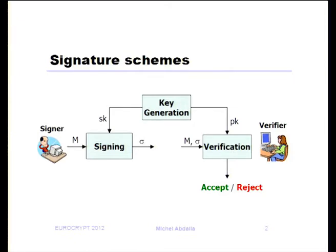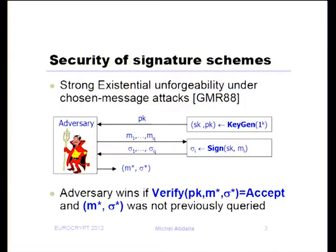This talk is about signature schemes, in which we imagine there is a key generation algorithm that generates the secret and public key — the secret key for signing and the public key for verification. The goal is: what is the standard notion of security? Here we'll be talking about strong existential unforgeability under chosen message attacks, where given a public key, the adversary can query an oracle to obtain valid signatures for messages of its choice, and eventually has to come up with a new message-signature pair not obtained through the oracle. The scheme is secure if the probability of such an event is negligible.